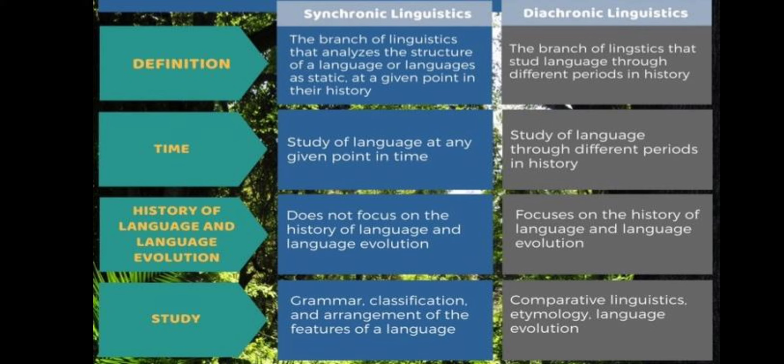These two approaches have to be kept clearly apart and pursued separately. Saussure considered synchronic linguistics to be more important. He states that the first thing that strikes us when we study the facts of language is that their succession in time does not exist so far as the speaker is concerned. He is confronted with a state. That is why the linguist who wishes to understand that state must discard all knowledge of everything that produced it — and that is diachronic.